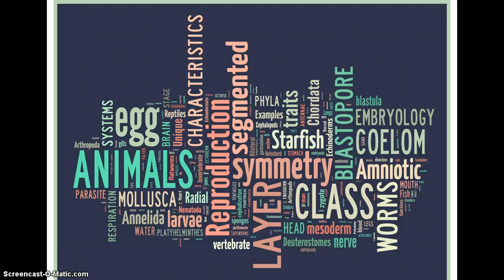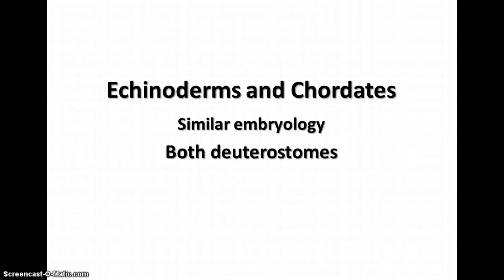The next set of notes on Kingdom Animalia is about the last two phyla of animals: the echinoderms and the chordates. Both of them are deuterostomes, whereas the other groups we talked about were all protostomes. Deuterostome means that the blastopore becomes the anus rather than the mouth, as it does in the protostomes.